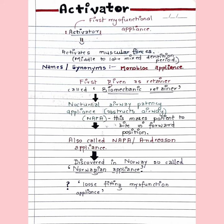NAPA prevents obstruction of the airway because the patient is made to bite in a forward position, which also brings the tongue forward. It is also called the Andresen appliance since it was discovered in Norway, and is thus also called the Norwegian appliance. It is known as a loose-fitting myofunctional appliance — the reason for this will be discussed as we go ahead.